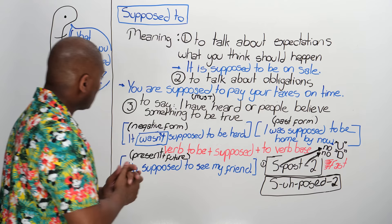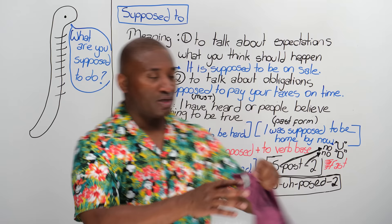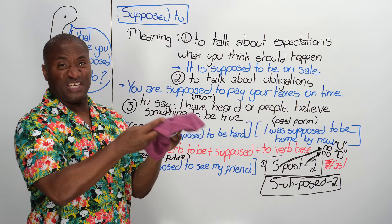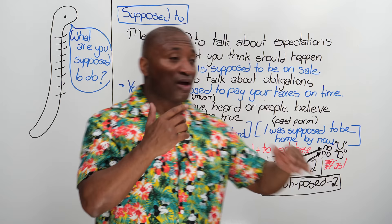So, what are you supposed to do? Our first meaning we look at is to talk about expectations — what you think should happen. If you went to a store and you saw this, and you said $20, it's supposed to be on sale. My expectation was it should be $15, but it's not $15, it's $20. That's more than I expected. It's an idea that you've had in your head about the way a thing should be.